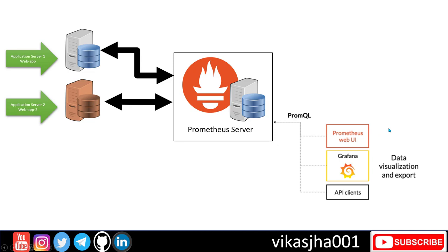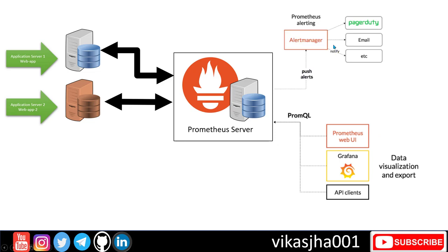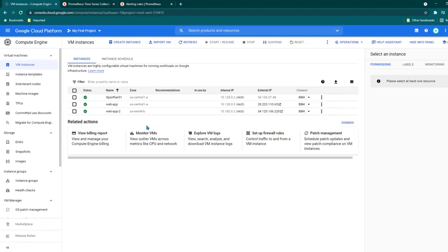Now we are going to introduce Alert Manager, and using Alert Manager we will be able to send an email. There are a couple of things we need to do: we need to define an alert in Prometheus, make sure Prometheus can read and act on that alert, and then once the alert is generated, Prometheus pushes it to Alert Manager, which is responsible for sending the email. This is the architecture of Prometheus alerting.